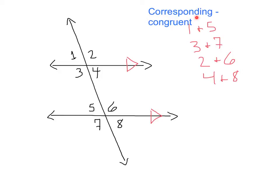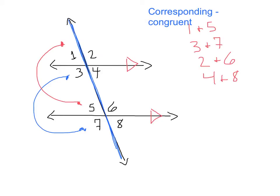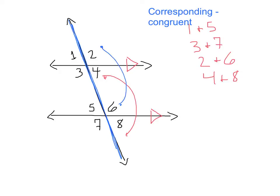Getting into some new stuff, we have corresponding angles. Corresponding angles are always congruent — they have the same measure. You can focus in on the transversal; corresponding angles are always on the same side of the line and they skip over to the next parallel line. So in this case, we have corresponding angles of 1 and 5, and also 3 and 7. On the right side, we've got corresponding angles of 2 and 6, as well as 4 and 8. The corresponding angles jump over one angle all the way to the other parallel line.